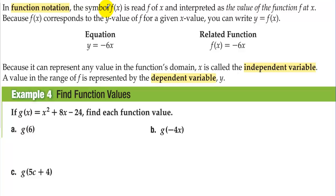In function notation, the symbol f of x is read 'f of x' and interpreted as the value of the function f at x. Because f of x corresponds to the y value of f for a given x value, you can write y equals f of x. Writing y equals or f of x equals means the same thing. Because x can represent any value in the function's domain, x is called the independent variable. A value in the range of f is represented by the dependent variable y.